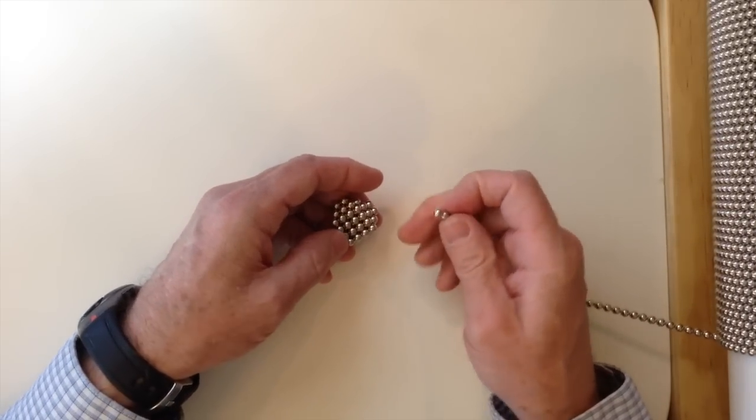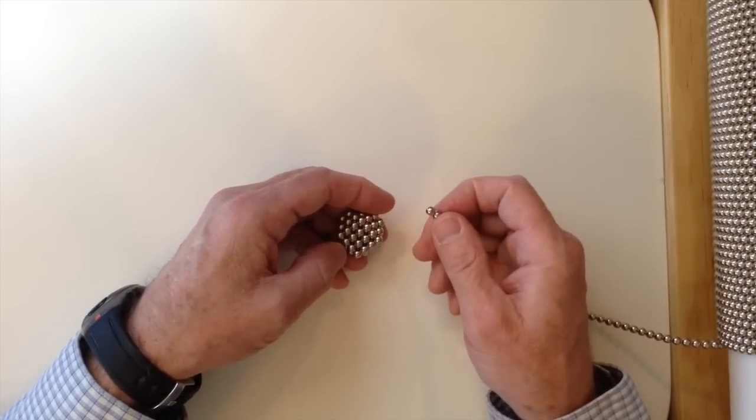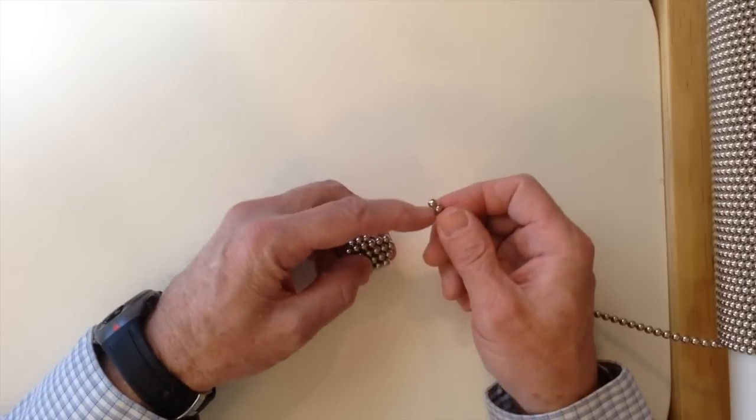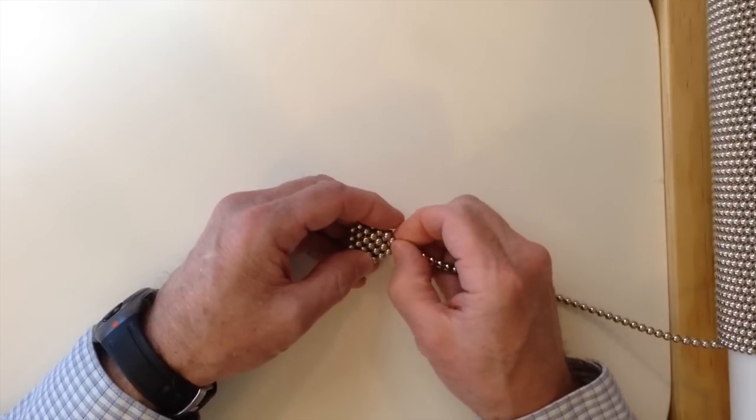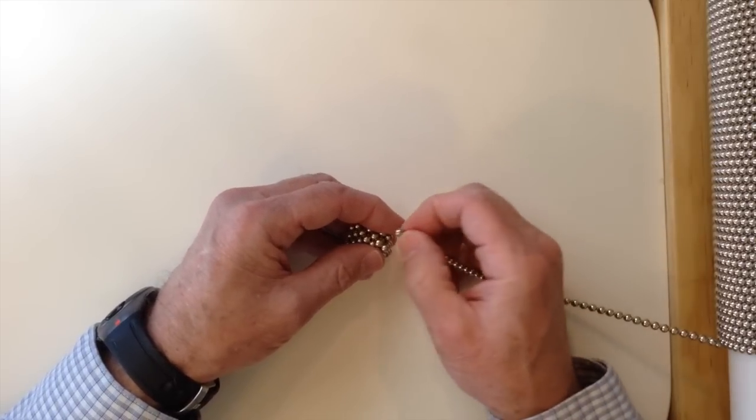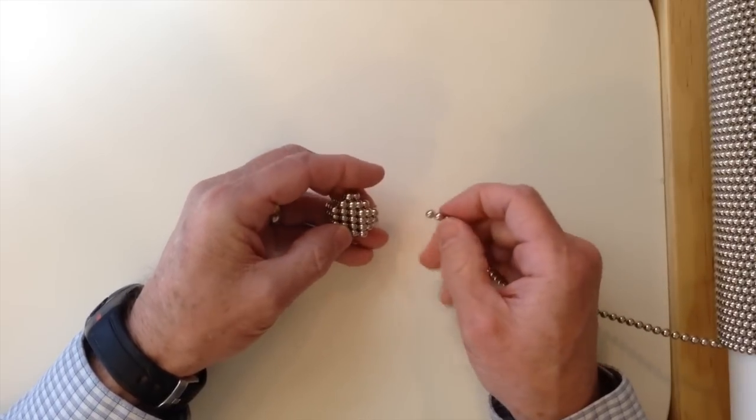And then we're going to build out these corners. It's going to look just like we did with the last step, where you take two magnets and try and attach them to this magnet here, push them up to there, and then add a magnet into the corner and then make sure the corner is solid.